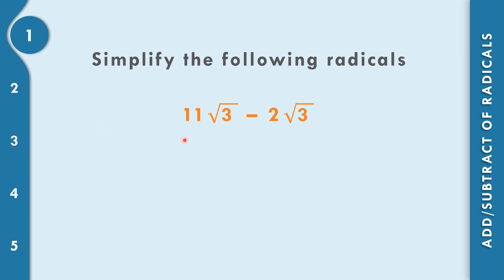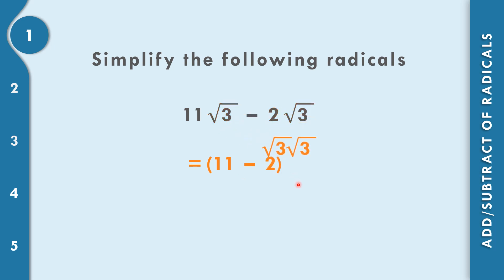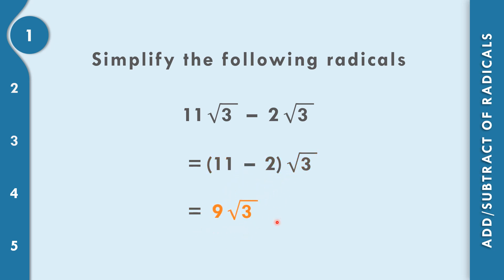In example number 1, 11 square root of 3 minus 2 square root of 3. Both have the same index and same radical. So that equals 11 minus 2, times square root of 3. 11 minus 2 is 9, so the answer is 9 square root of 3.